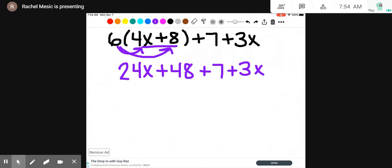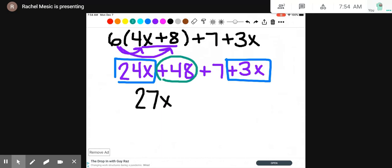Then I will find terms that have the same variable. So I have 24x plus 3x. So 24x boxes plus 3 more x boxes is 27x boxes. Then I have the integer 48 and plus 7 more. So 48 plus 7 is 55.